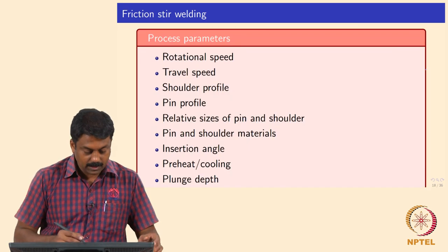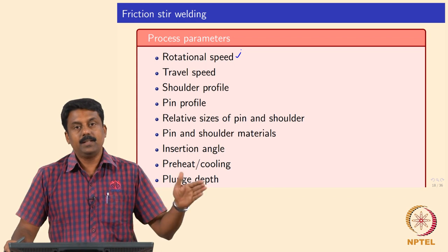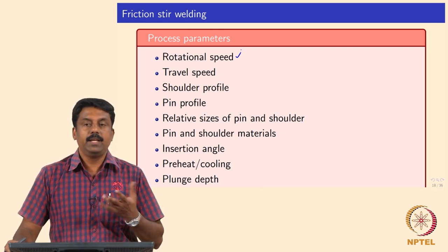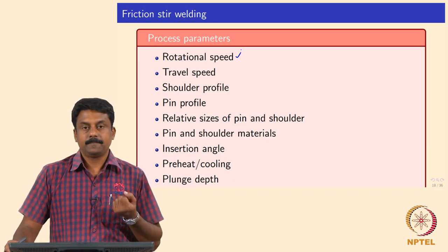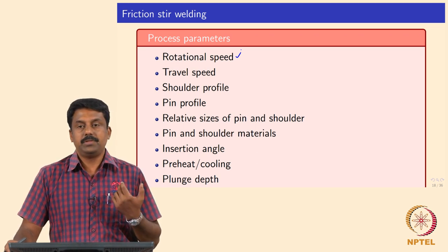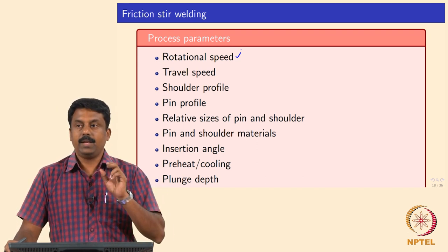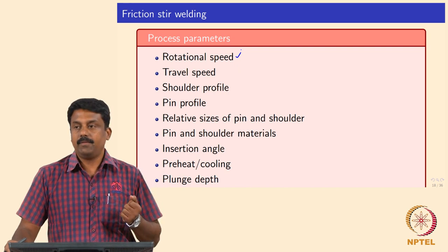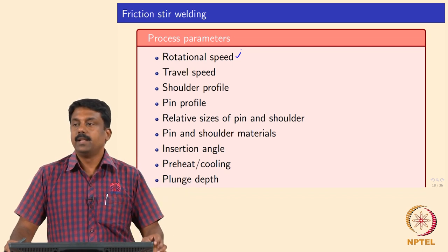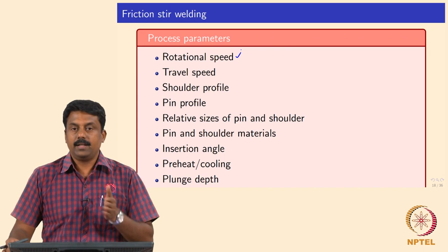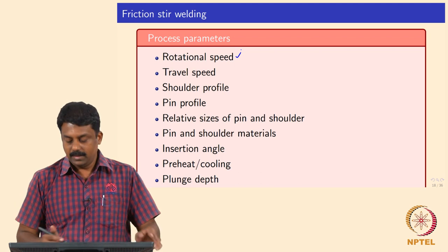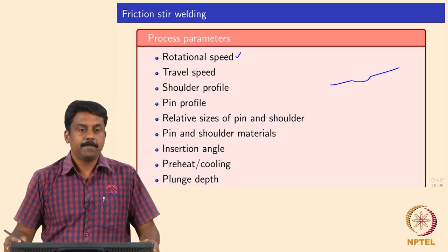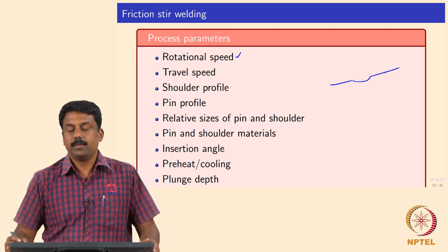The process parameters are: rotational speed (RPM of the tool), welding speed or travel speed, shoulder profile, pin profile, and the relative size of the pin to the shoulder — all of which influence material flow and frictional heat generation. Also important are angle of insertion, preheating, cooling, and plunge depth. Plunge depth means how deep the tool penetrates the material. Generally if the thickness is 10 mm, we keep a slight material left at the bottom; the plunge depth is always less than the thickness to avoid swagging.